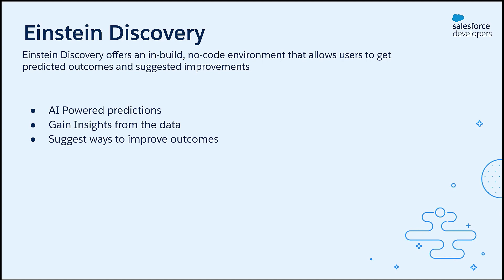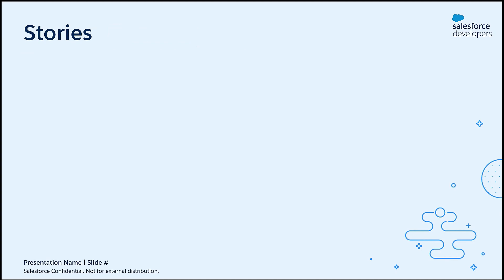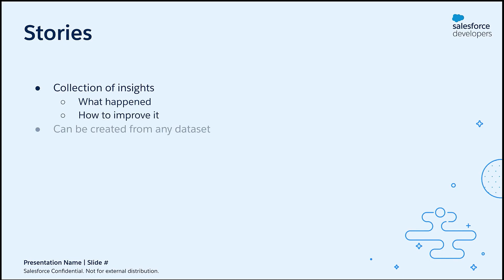Using Einstein discovery, users can automatically discover patterns from the data without having to build any data models. In Einstein discovery, we can create stories to get insights from our data. A story is nothing but a collection of insights, generated based on the provided data and analytical settings. It gives us insights like what happened, why it happened, etc. A story contains insights about your data along with visualizations and some description to help you better understand the data. Once the story gets created, Einstein discovery will generate relevant insights and patterns for you to explore.